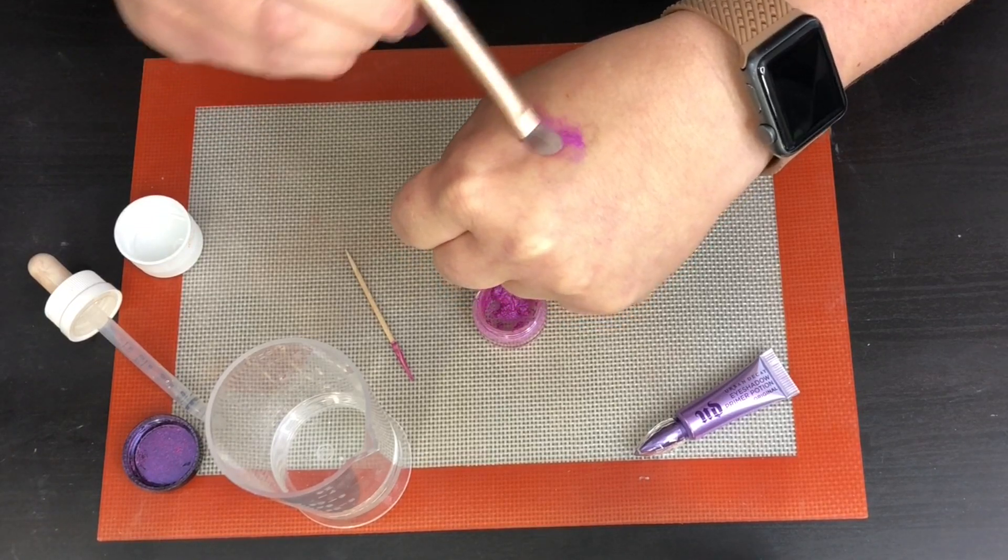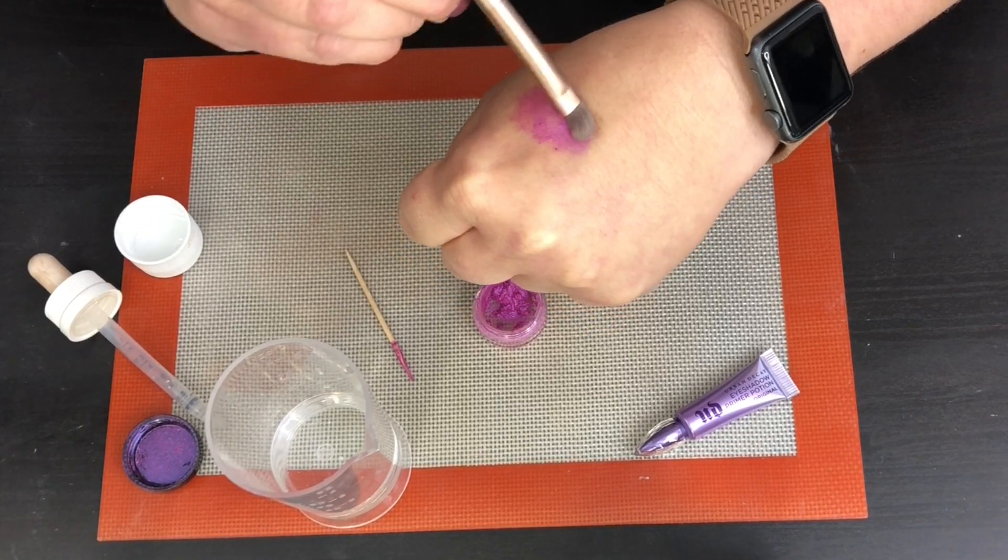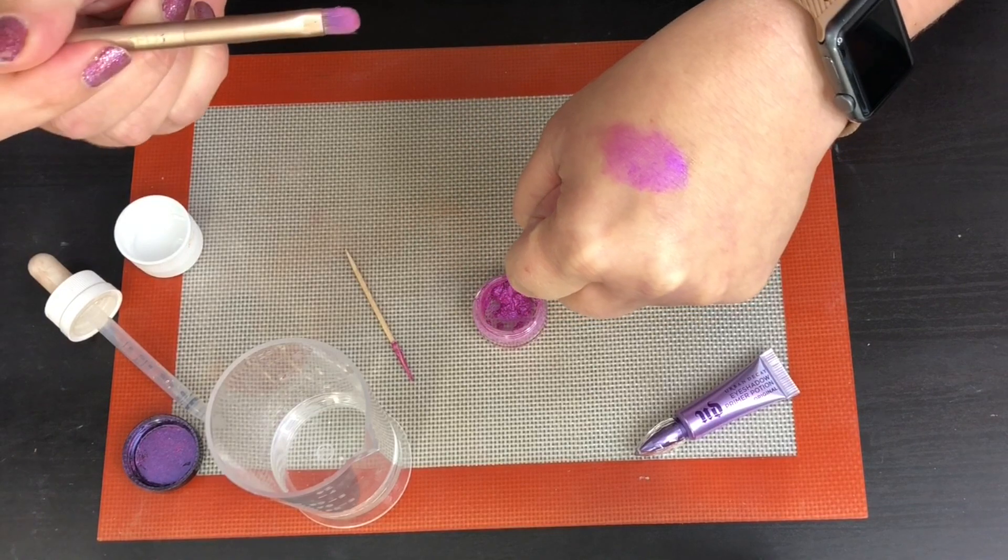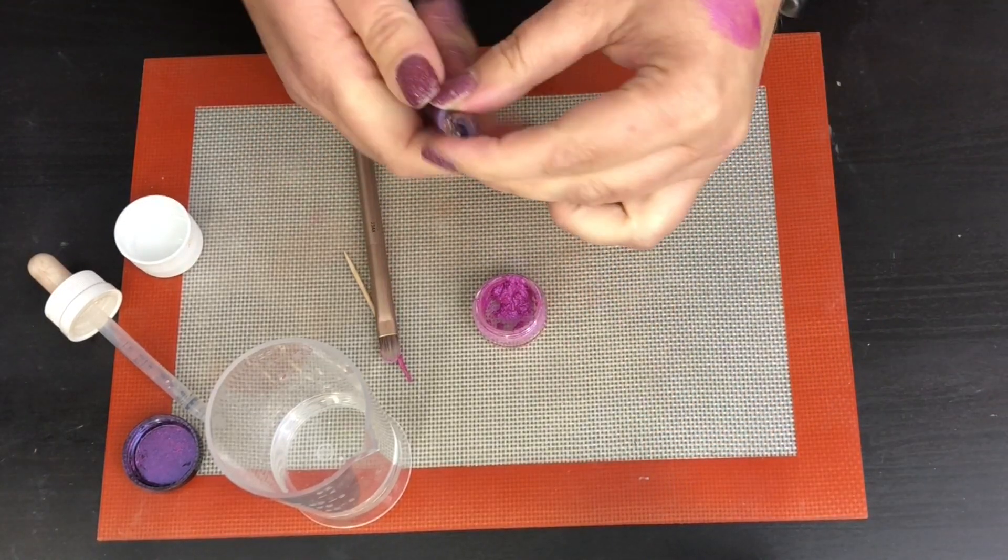And I'm just going to take this brush right here. You can see it's a little clumpy, and if that's the case then you want to add a little bit more primer, and that'll help smooth it out.